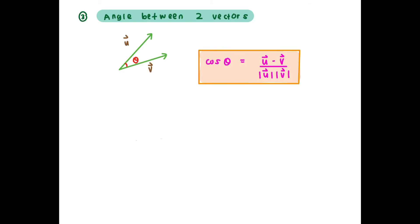Let's see the application of dot product. It is the angle between two vectors. So let's say we have vector u and vector v. Therefore, using dot product, we can find the angle theta between these two vectors.